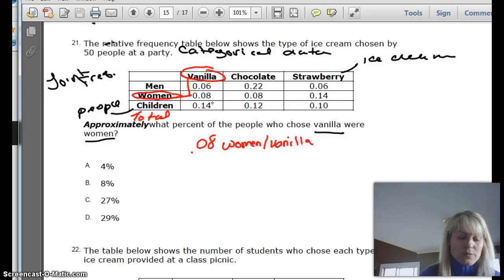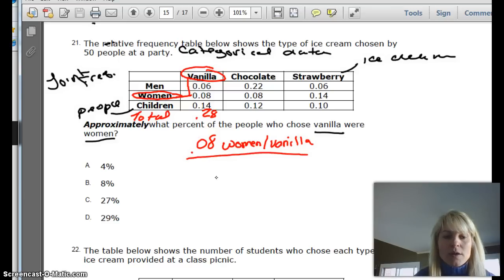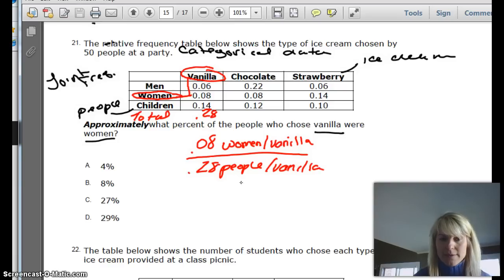So I'm just going to add these up to get the total. And so if we do that, I'm just going to be a little quicker and use my graphing calculator. And we have 0.06, 0.08, plus 0.14. So I get a total of 0.28 people that liked vanilla. So we needed to put this over 0.28 people that liked vanilla. So that is our total of people that liked vanilla.